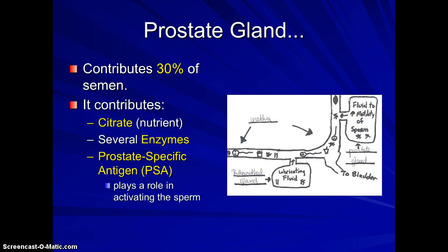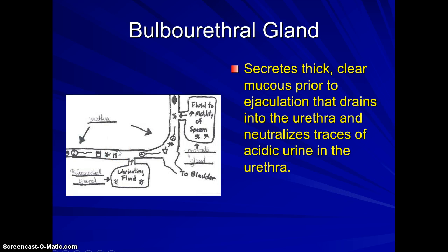The prostate gland contributes about 30% of the semen. It produces citrate as a nutrient, several enzymes that activate the sperm, and prostate-specific antigen (PSA), which also plays a role in activating sperm. Men over 50 get a PSA count — if prostate cancer is present, PSA numbers can go up. However, it's not a perfect test: many men have false positives with high PSA but no cancer, while some men have cancer with normal PSA levels, so it's used as a guide but not a definitive diagnostic.